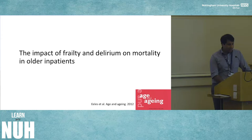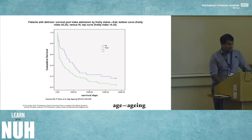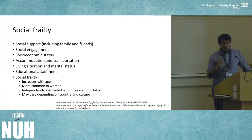A paper from Age and Ageing in 2012 looking at hospital inpatients shows Kaplan-Meier curves: those who are frail on the green line are less likely to be alive compared to fitter people. A second curve looking at people who are frail with delirium shifts right down to the left, emphasising that synergistic negative outcome associated with physical and cognitive frailty together.